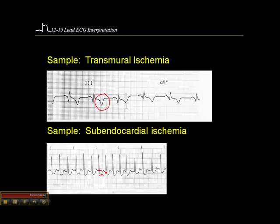Subendocardial ischemia is reflected in ST segment depression. Here's the baseline and here's the ST segment depressed below it. There are a couple of dozen different causes of ST segment depression. In order to say definitively that this is subendocardial ischemia, we either have to see a normal rhythm where the ST segment is at baseline and then a tachycardic rhythm in the same patient where the ST segment sags below the baseline, and we also have to see it in two anatomically contiguous leads — or we have to know that their ECG prior to this event was normal.